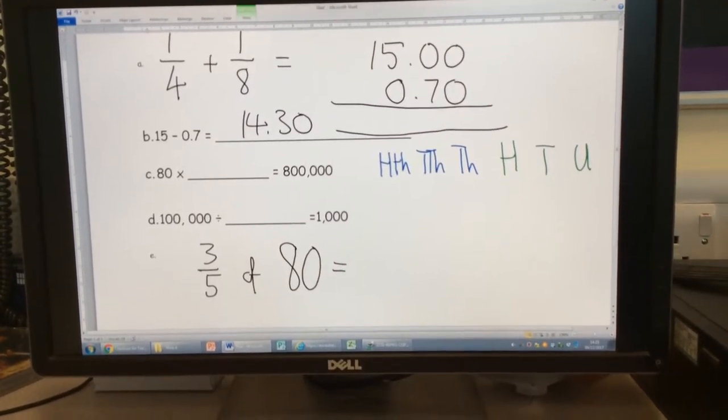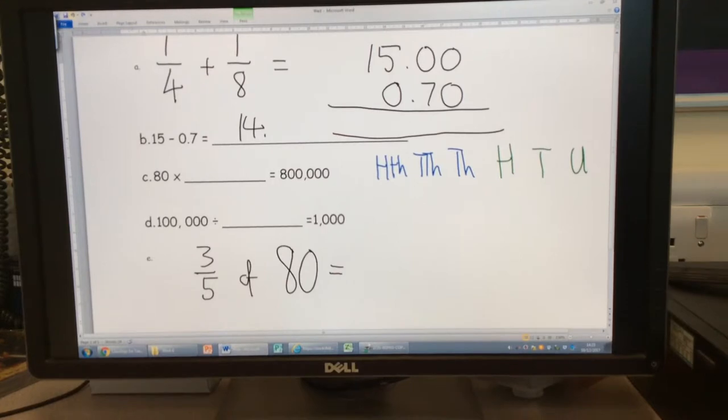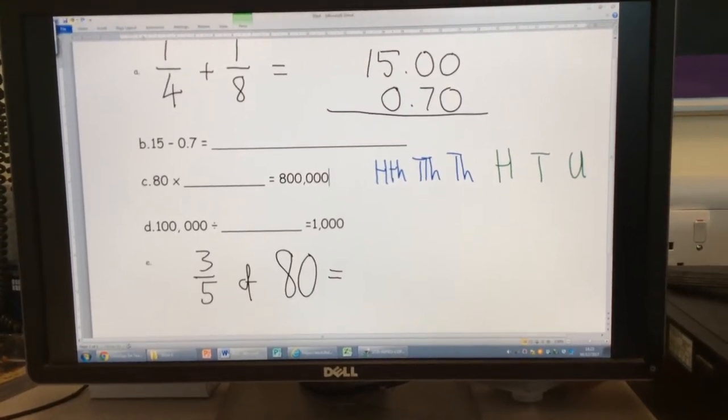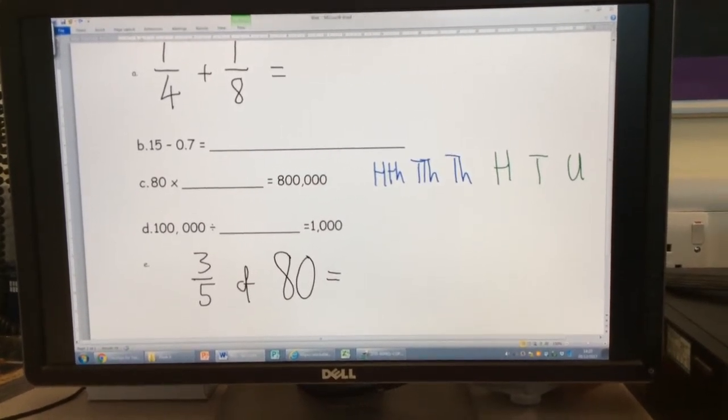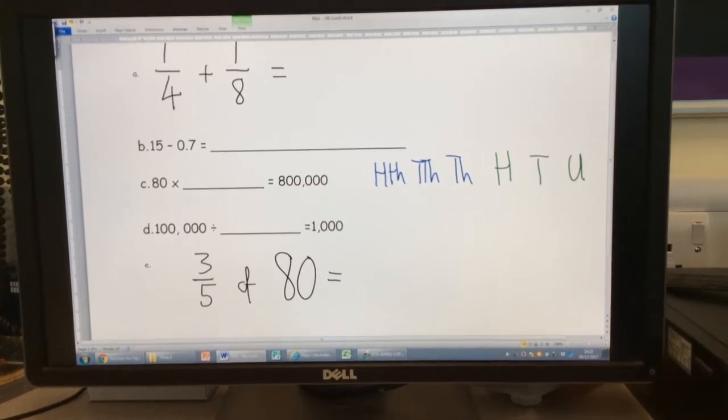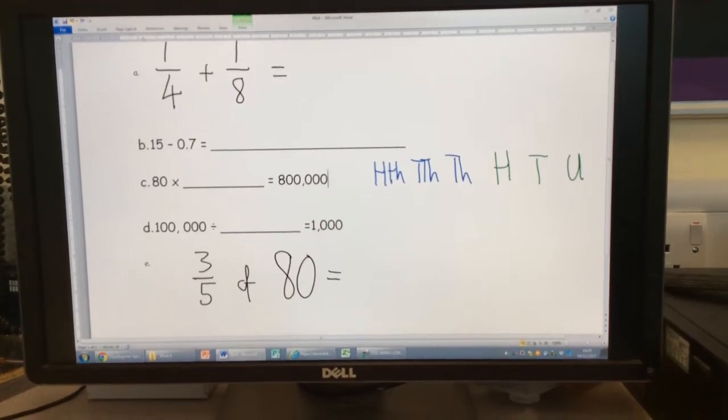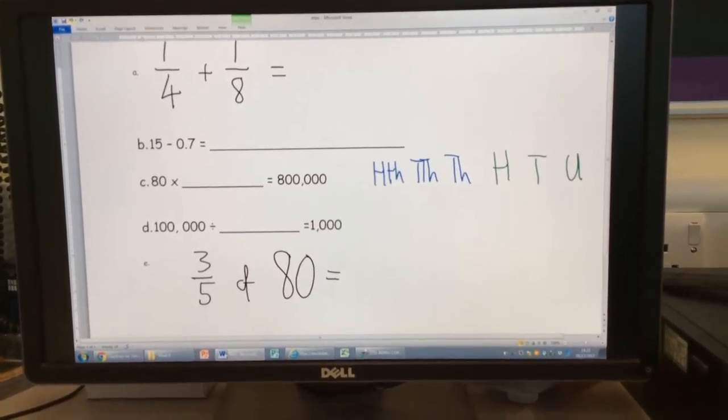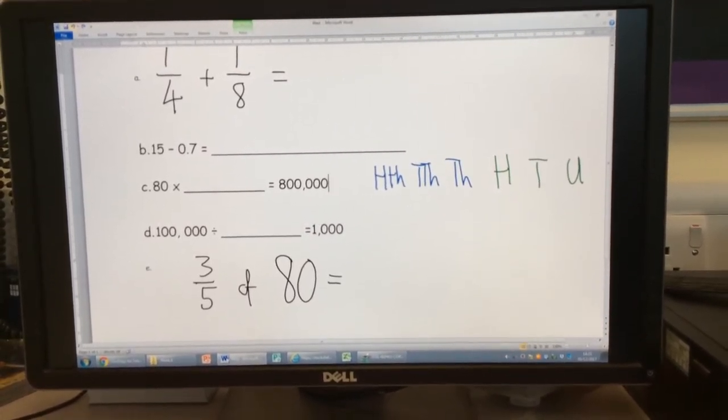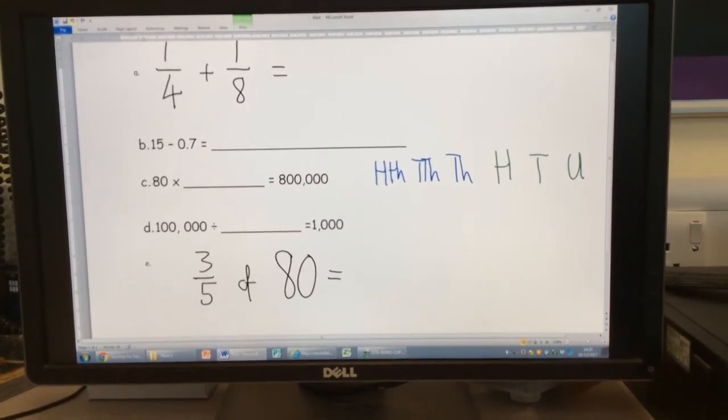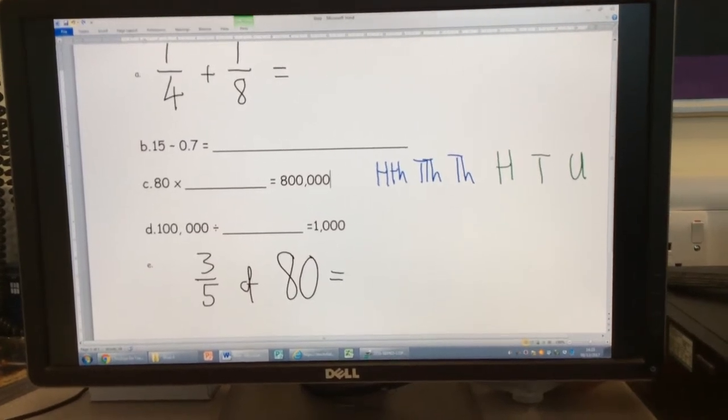Let's have a look at the next one here. We've got 80 times something, multiplied by something, equals 800,000. Who wants to tell me how we're going to work this one out? Dan, can you tell me how we're going to work this one out? We're going to have to find out what 80 times something equals 800,000. Can you give us a strategy? If you were stuck with that, you couldn't spot it straight away. What strategy might I want to use?